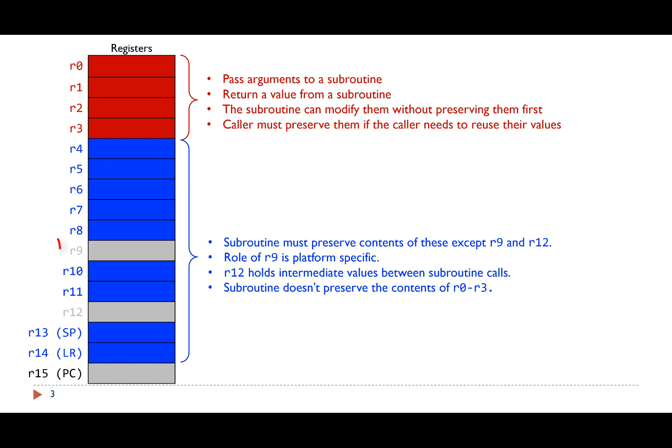The role of register R9 is platform-dependent and typically is not required to preserve its value. The caller does not expect the subroutine to preserve the first four registers, R0 to R3, and register R12. If the caller wishes that these registers remain unchanged, the caller should push these registers onto the stack before it calls the subroutine.